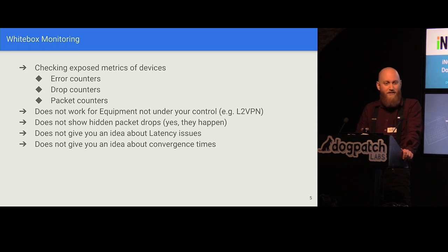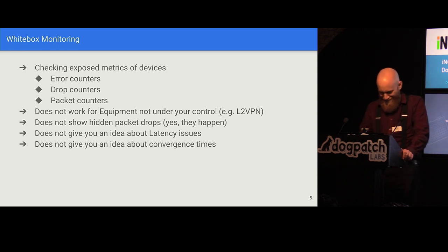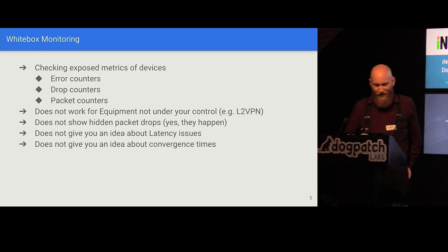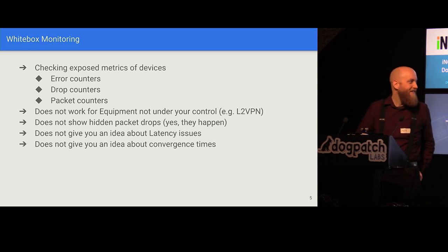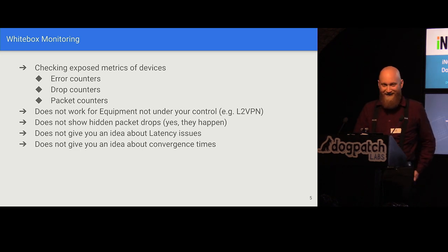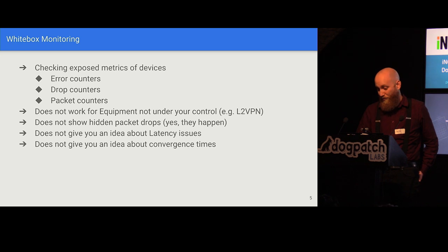Let me ask a quick question to the audience: who has experienced packet drops that were not shown by counters on devices? Yeah, they happen and they are an issue. Also, these counters don't give you any idea about latency — the router doesn't tell you how fast it forwarded a packet, what path was used, or what latency accumulated.